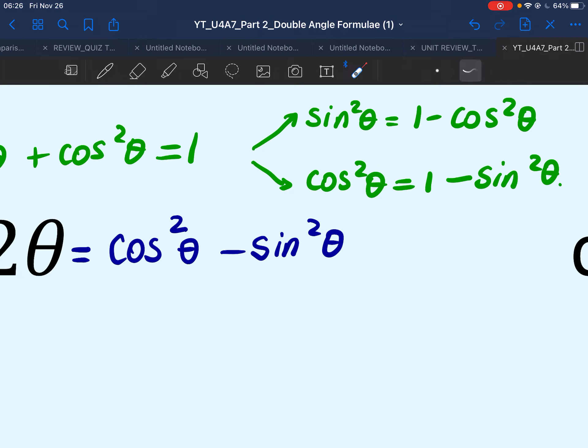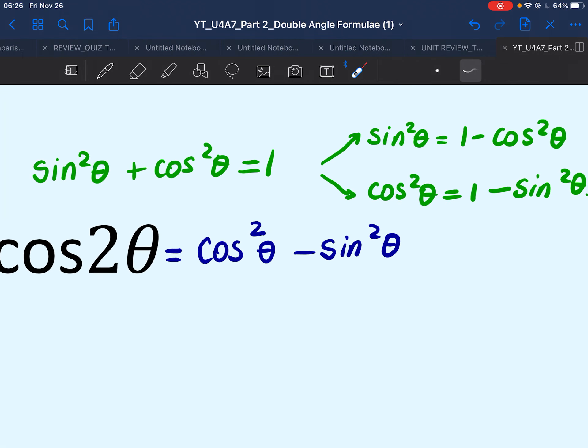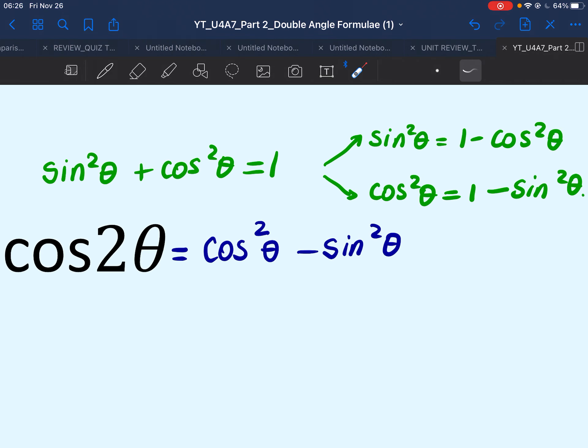The presence of terms to the power of 2, which are typical in the Pythagorean identity, bring more variety in the formulas for cosine double theta. So as you probably have imagined already, if you replace cos square theta by 1 minus sine square theta,